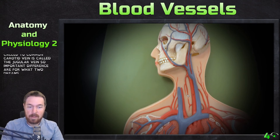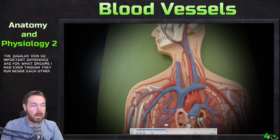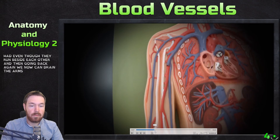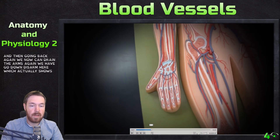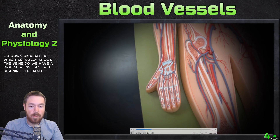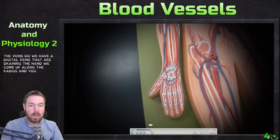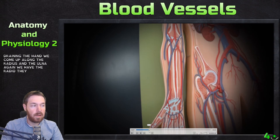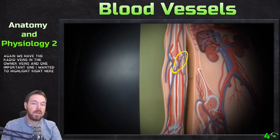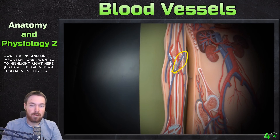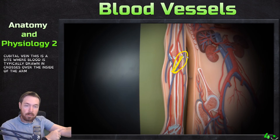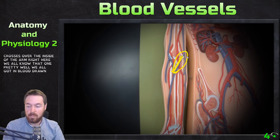Draining the arms: we have digital veins draining the hand, then coming up along the radius and ulna we have the radial and ulnar veins. One important vein to highlight is the median cubital vein — this is the site where blood is typically drawn. It crosses over the inside of the arm, which we're all familiar with.